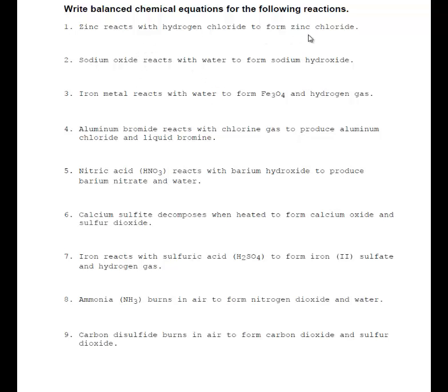Number one, zinc reacts with hydrogen chloride to form zinc chloride. Zinc, you should be able to look that up in the periodic table. Zn. Let's go ahead and make that a little thicker. Hydrogen chloride. Well, hydrogen is H, chloride is Cl.